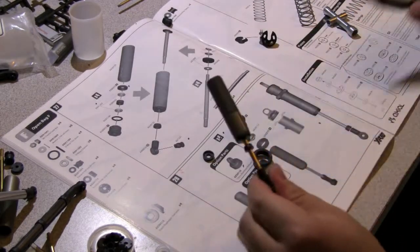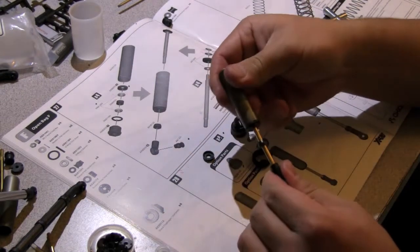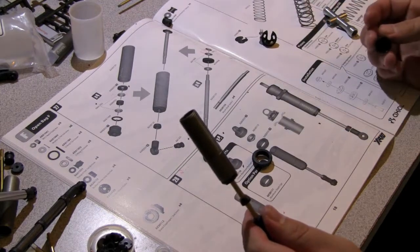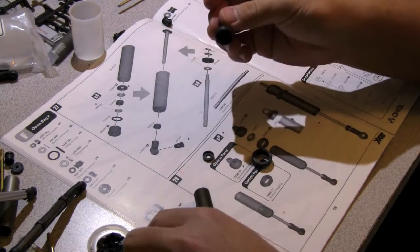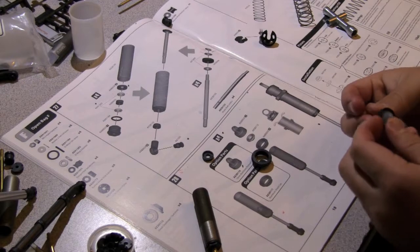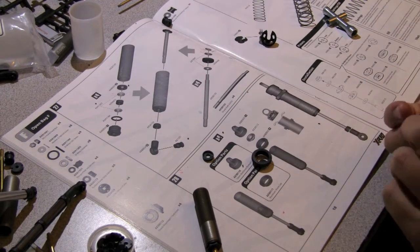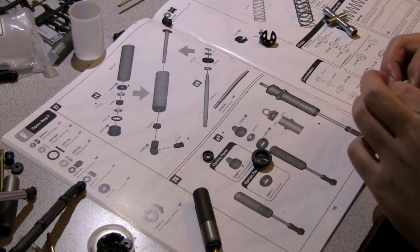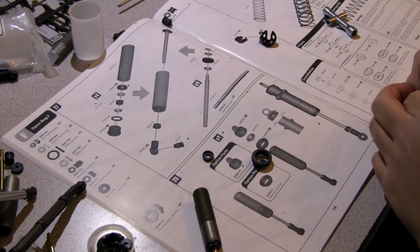So I finally tightened down the actual shock. Now what the manual asks us to do is actually get the shock cap then the diaphragm. But before you actually put on the diaphragm, you want to put on the aluminum shock cap, the preload collar,